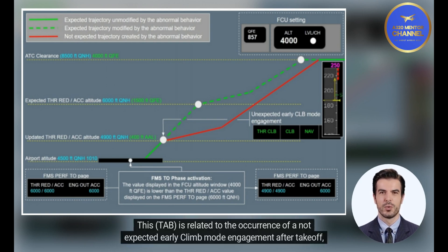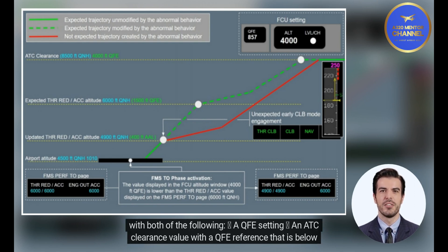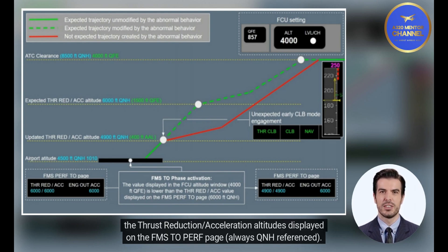This TAB is related to the occurrence of a not-expected early climb mode engagement after takeoff, with both of the following: a QFE setting and ATC clearance value with a QFE reference that is below the thrust reduction/acceleration altitudes displayed on the FMS perf page, always QNH referenced.